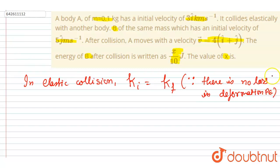Since there is no loss in deformation potential energy, since there is no deformation remaining after the elastic collision and the body completely regains its shape and size. If you see here, it is given that mass A and mass B are 0.1 kg, so let's say this is m.